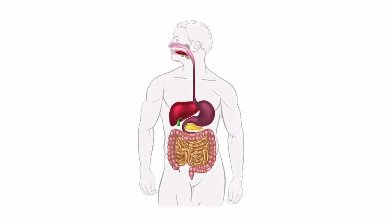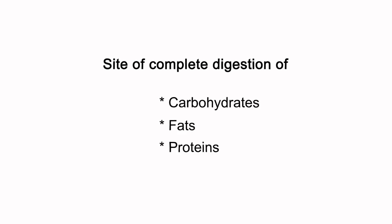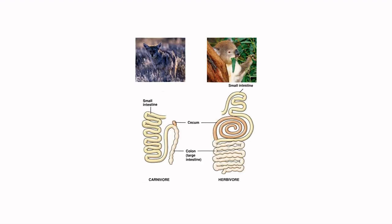The small intestine is the largest part of the alimentary canal and is structurally extensively coiled. It is the site of complete digestion of carbohydrates, fats, and proteins. The length of the small intestine differs in various animals. Herbivores have a longer small intestine for the digestion of cellulose, while carnivores have shorter intestines as meat is easier to digest.